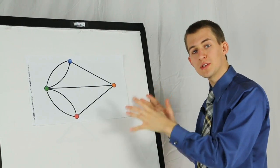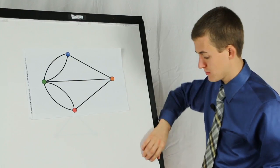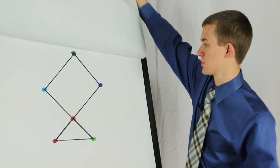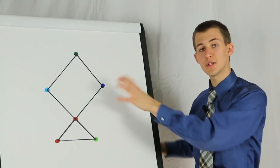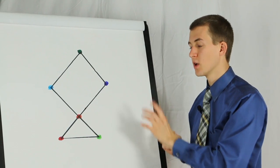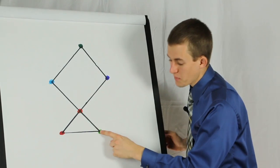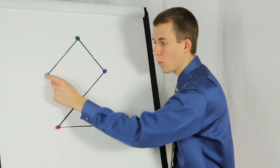Mathematicians call this kind of representation a graph. Here's another example of a graph. Notice here that there's a path which travels each edge once.